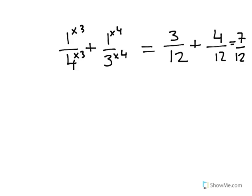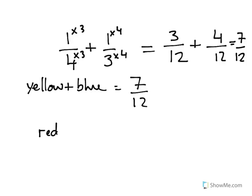So now we know that seven twelfths of our fractions are yellow and blue, are seven twelfths of our whole bag. So how many are red then? Well the red must equal twelve twelfths, the whole one, minus seven twelfths, which is five twelfths.